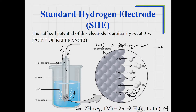We hook the SHE up to another half cell and measure the cell potential of the overall cell — because that's all we can measure. A half reaction doesn't happen by itself; a half cell won't occur on its own. But we hook it up to this reference and call it zero, so everything else gets assigned to the other electrode.